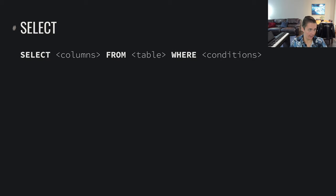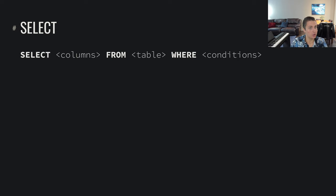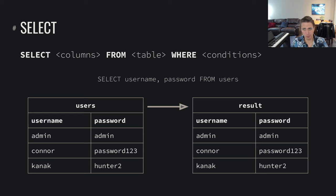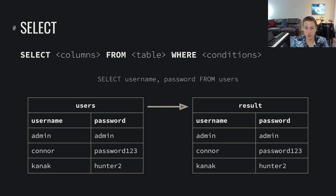If we want to start querying that data, we use the Select operation. We can select some number of columns from some table name, with optional conditions on what rows to return. In the base case, we can run Select Username, Password From Users, which returns all the usernames and passwords from the table — all rows with those columns, giving us every user's credentials.